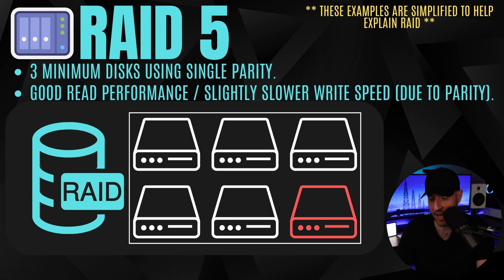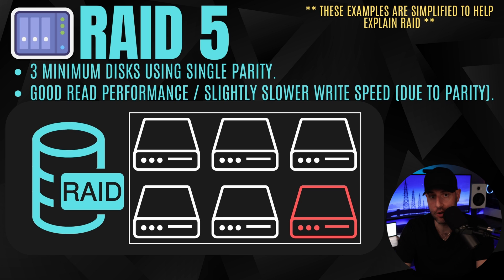RAID 5 requires at least three disks and has single parity. Blocks of data are written across all disks, and one block is written as parity. So if you lose any one disk, you will not lose any of your data. For example, with five hard drives, you can lose any one of them and be fine. But if you lose two hard drives, you will lose the entire storage pool. RAID 5 has good read performance and slightly slower write performance because of writing parity.